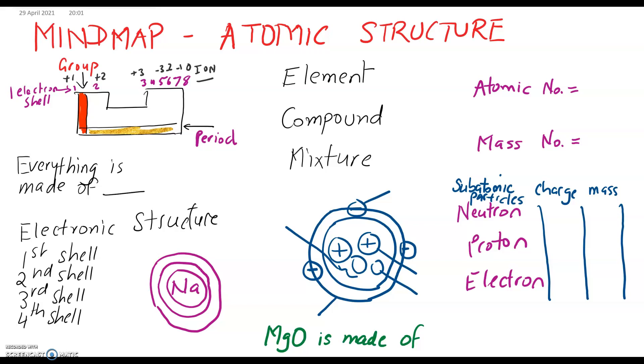Everything is made out of atoms. Let's have a look at the definitions that come up quite a lot. These three keywords here—element, compound, and mixture—come up quite a lot in terms of definitions. An element is made out of one type of atom only. A compound is made out of two elements chemically bonded together.